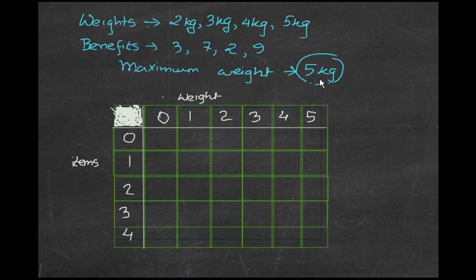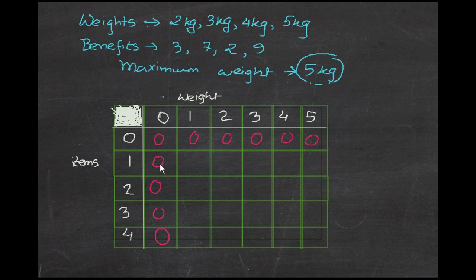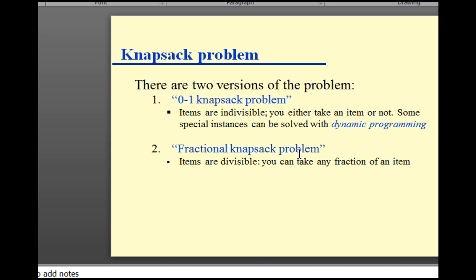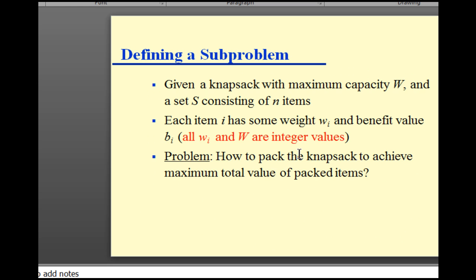When drawing the table for this problem — as with most dynamic programming algorithms — we initialize all zero rows and zero columns to zero, like we did in the Longest Common Subsequence problem. The column part of the table represents the weights. Since the maximum weight is 5, we write weights from 0 to 5. The rows represent the items — there are four items, so rows go from 0 to 4, with 0 as the initialization point.